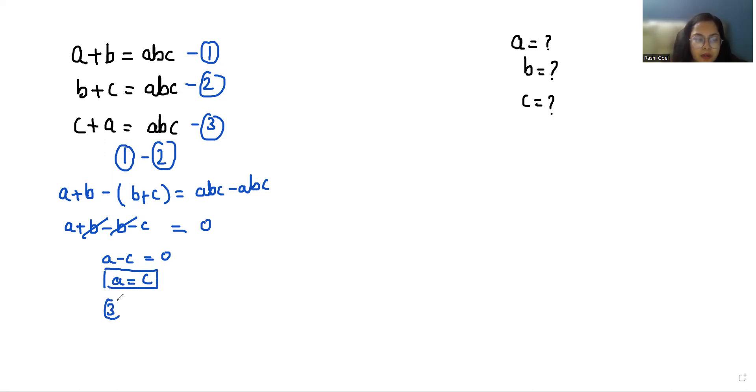Now from equation three minus two, c plus a minus b plus c equals abc minus abc. So c plus a minus b minus c equals zero. So a minus b equals zero, so a equals b.